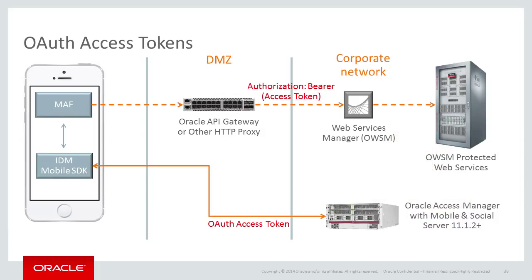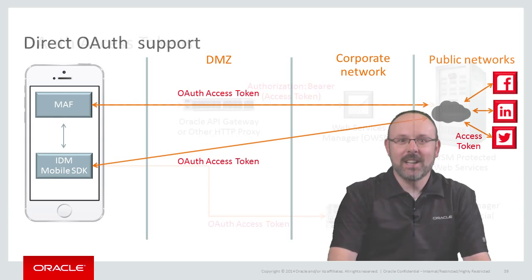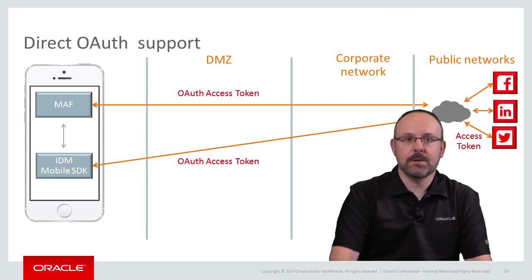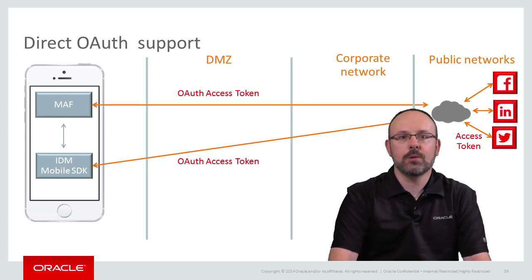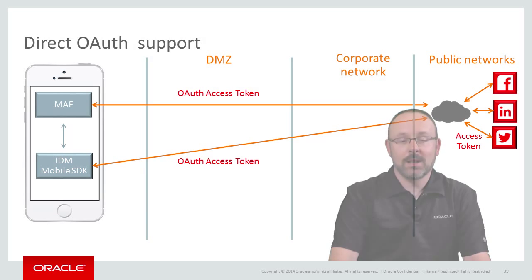Thus, you can substitute OAuth tokens for JWT tokens and still have a viable scenario. The tokens must be intercepted by a proxy, which will then invoke secured web services using an alternate authentication method. Finally, MAF's support for OAuth tokens means you can authenticate directly with a supported third-party cloud-based authentication service. In that case, the token obtained at authentication time will be used for remote API calls as well. Usually, this means the application, or at least the application feature, will deal with external resources exclusively.